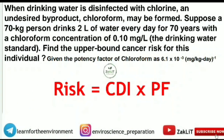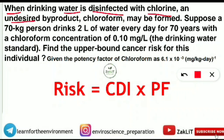Here comes the question asked in the examination. No need to worry by looking at this lengthy question — once you know the formula it will be very simple. The question informs us that when drinking water is disinfected with chlorine, an undesired by-product chloroform may be formed. This is an important concept: chlorine is the chemical used for disinfecting drinking water, but as a result of the chemical reaction, the carcinogenic compound chloroform may also be formed as an undesired by-product.